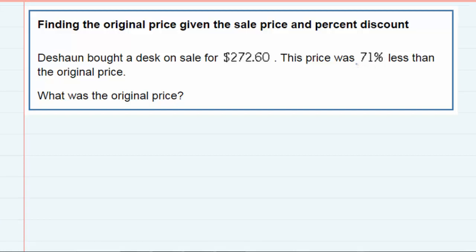I'm going to start with this 71% less than the original price. We're trying to figure out what the original price was, and if it's 71% less than the original price, another way of looking at this is saying that it was 100% of the original price minus 71% of the original price. So Deshawn actually paid for 29% of the original price.